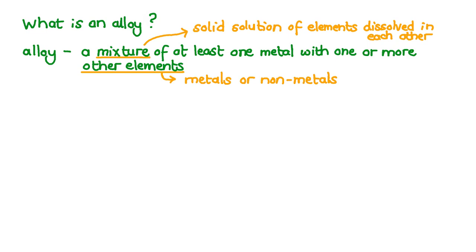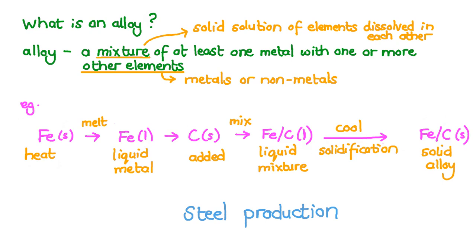Now almost all metals around us in our everyday lives are alloys and not pure metals. So how do we get a solid solution mixture of a metal with other elements? Let's take the example of steel production.